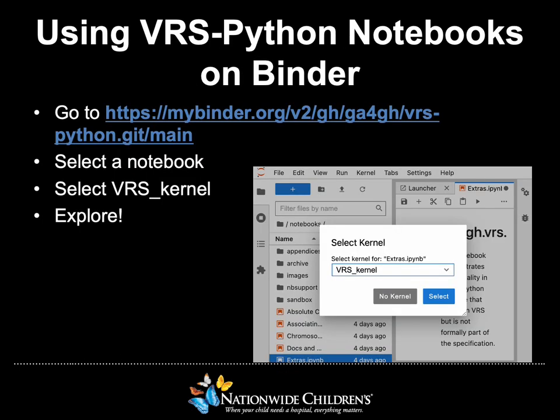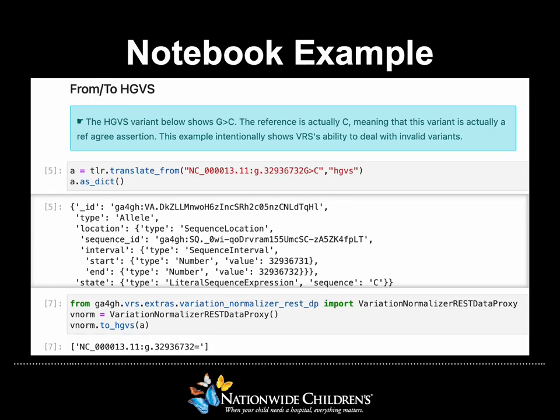Using the cloud-based notebooks is simple. Visit the Binder URL listed, select any notebook, select VRS kernel as shown in the image, and then you're free to explore! Here's an example of what one of the notebooks looks like. This specific notebook enables a user to edit the code to translate to and from HGVS. This is only one of many capabilities built into the notebooks. Additionally, users are able to add their own cells and write their own VRS Python code and view the output by running the cells.